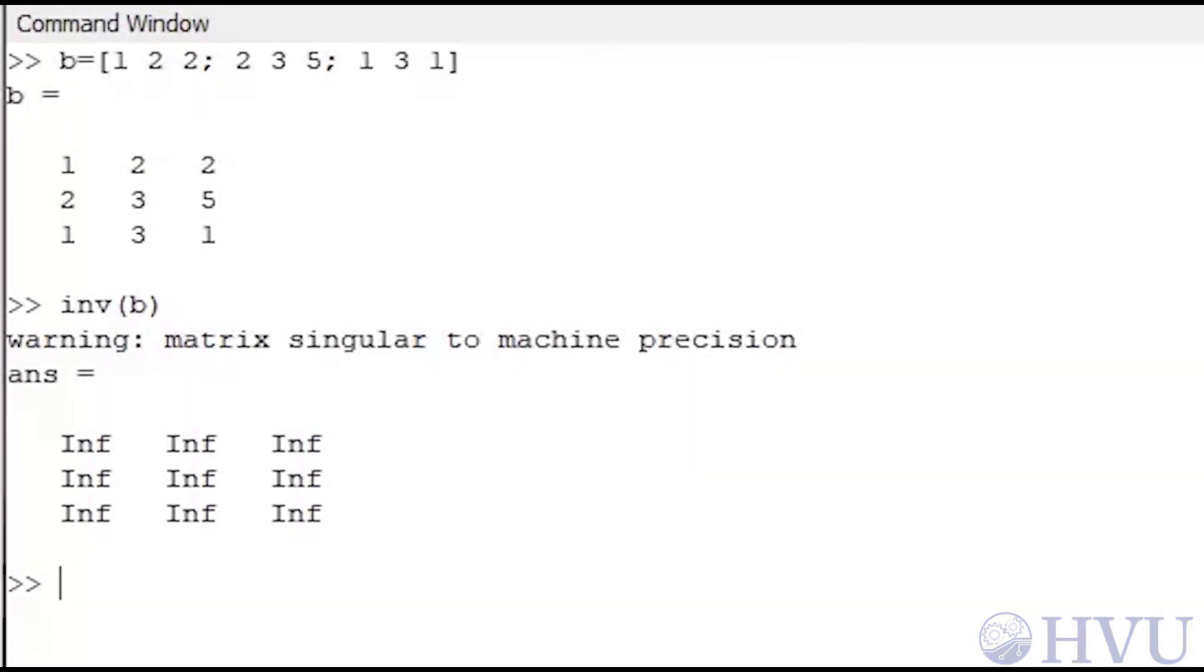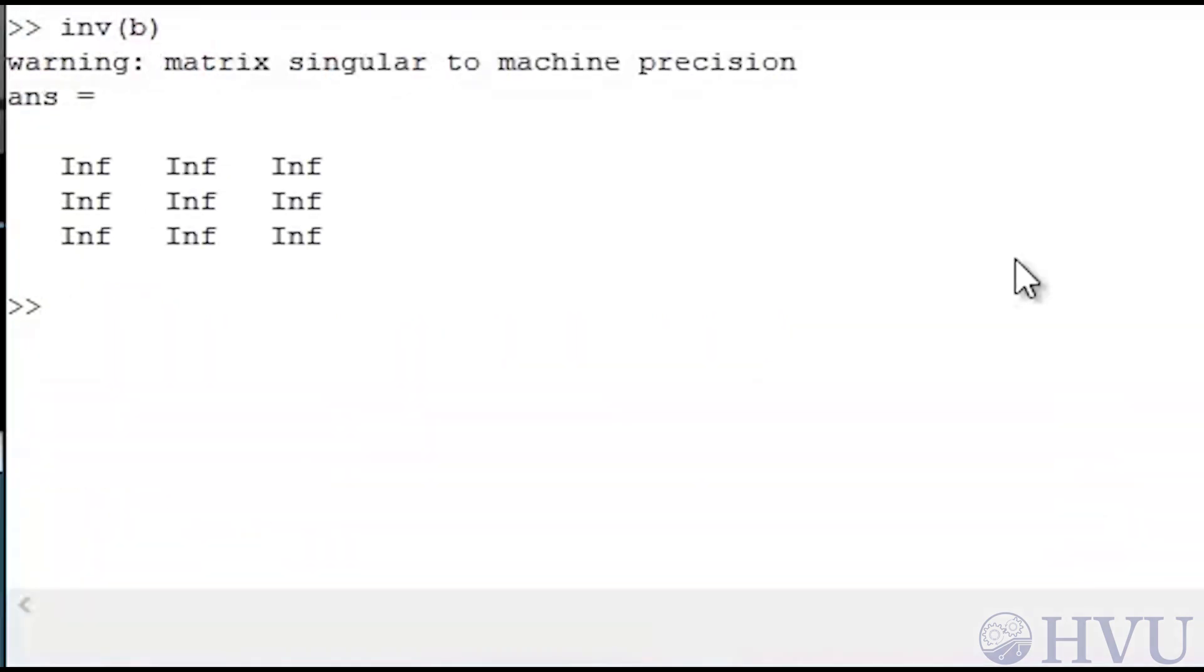That means that this matrix is not full rank. The rank of a matrix is the number of independent rows, and for a matrix to be full rank, its rank has to be the same as the total number of rows. To check the rank of the matrix B, I type RANK of B.